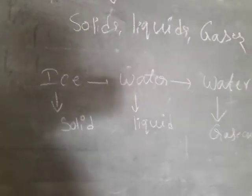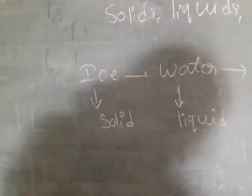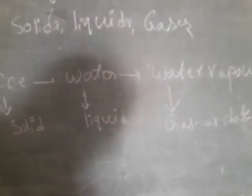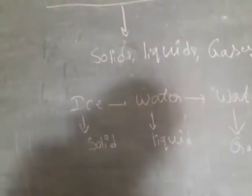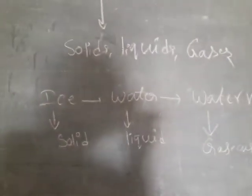These are the three forms of water: Ice, Water, and Water Vapor. Ice is a solid state, water is a liquid state, water vapor is a gaseous state. Now we will see the interchangeable states of water through a diagram — how to change the states of matter.